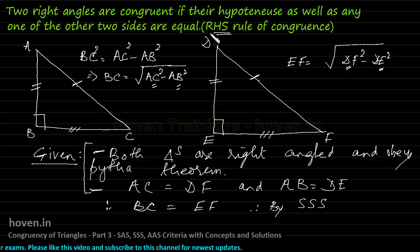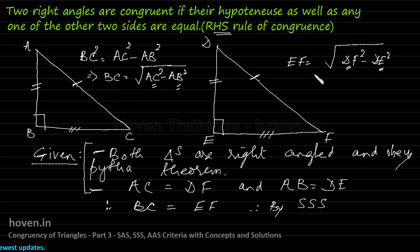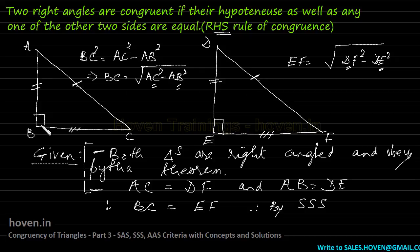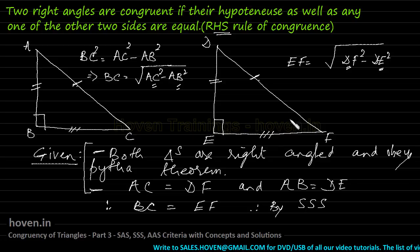This proves that if the right angle, hypotenuse, and one side are respectively equal, then the two triangles can immediately be taken to be congruent. Otherwise we would have to find the third side and prove the SSS rule — we need not follow that last step. We can simply say: if this equals this, this equals this, and these are right-angled, then the RHS rule will simply prove them to be congruent.